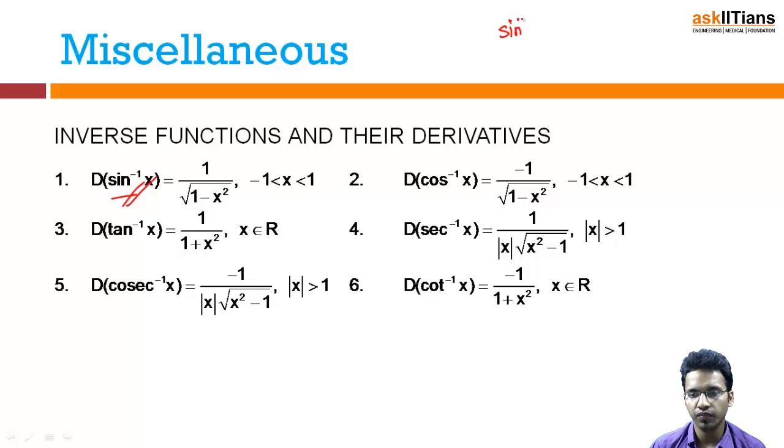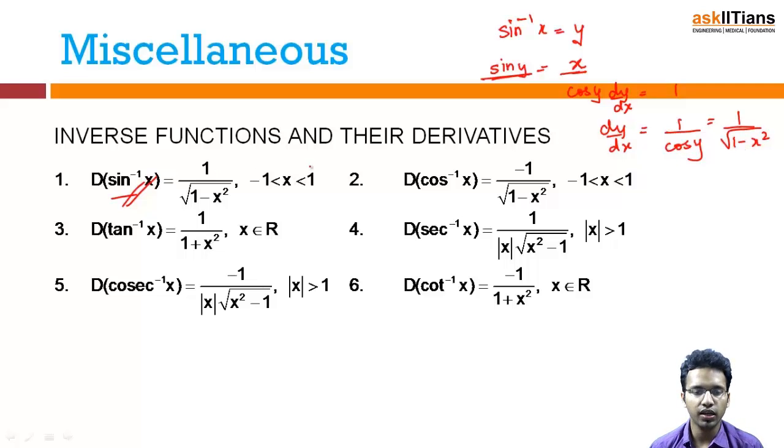For this what you can do: you can let this is y, sine y is equal to x. Now you can differentiate with respect to x, so you will get cos y dy by dx equal to 1. So dy by dx is equal to 1 by cos y. Now if sine y is x, obviously cos y you can write it as 1 over root under 1 minus x square.